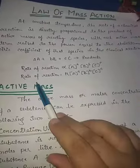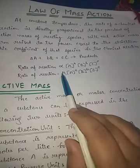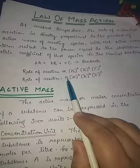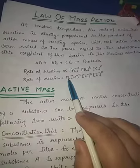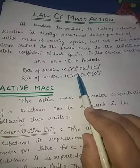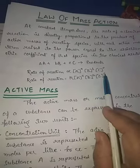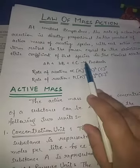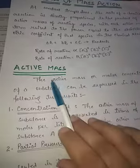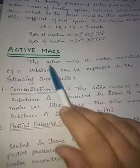When the proportionality sign is removed, a constant K is introduced, giving: rate = K[A]^a [B]^b [C]^c. This is the Law of Mass Action.